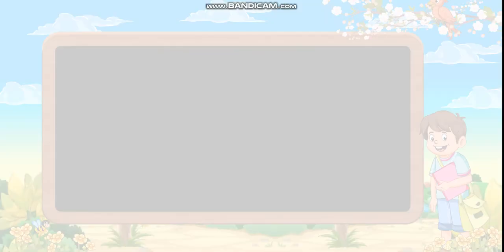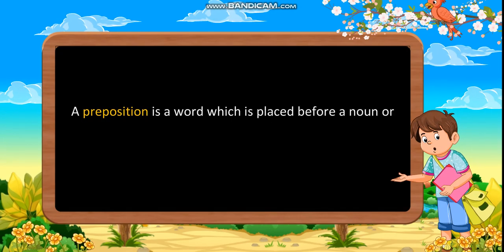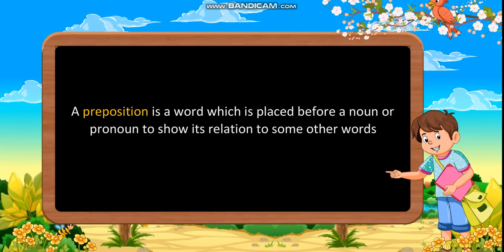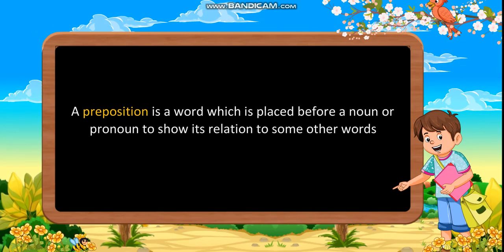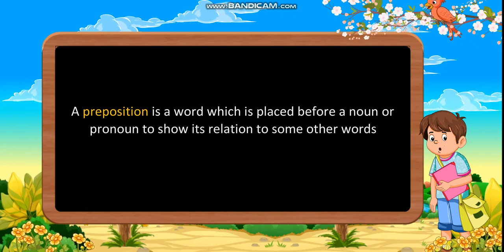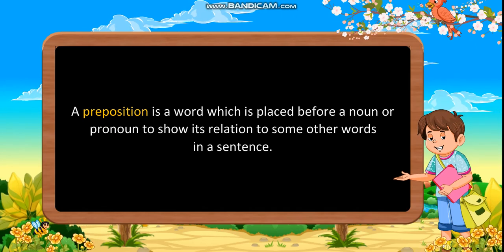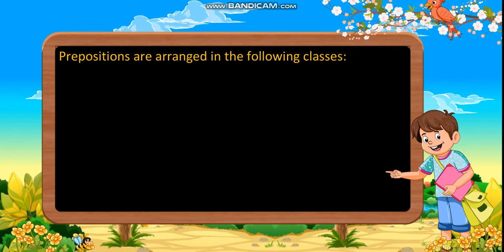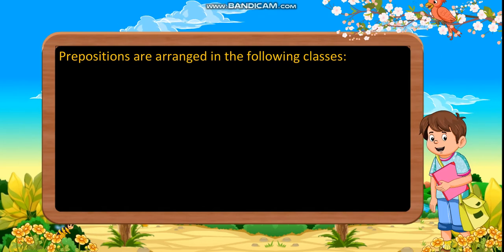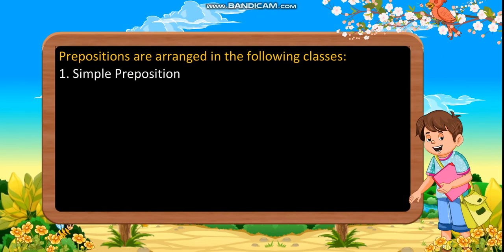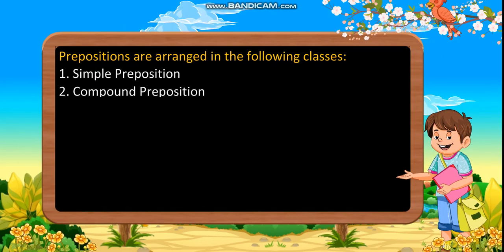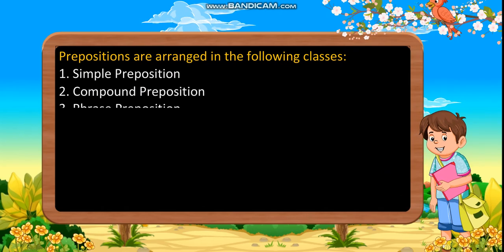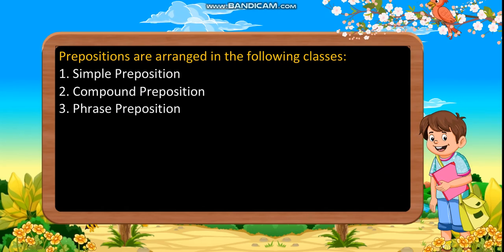Prepositions. A preposition is a word which is placed before a noun or pronoun to show its relation to some other words in a sentence. Prepositions are arranged in the following classes: first, simple preposition; second, compound preposition; and phrase preposition.